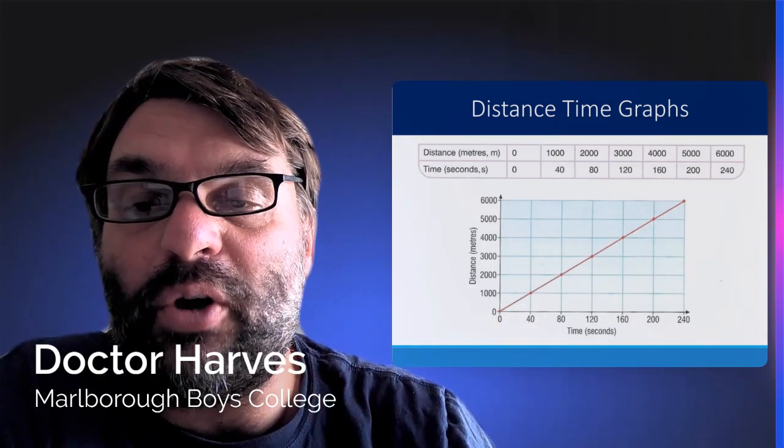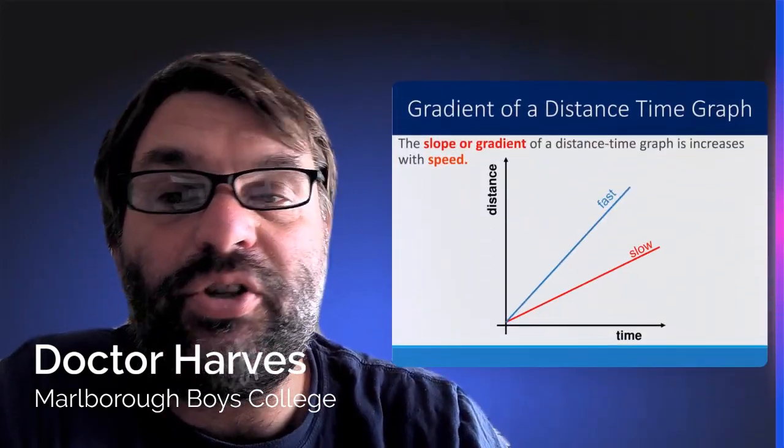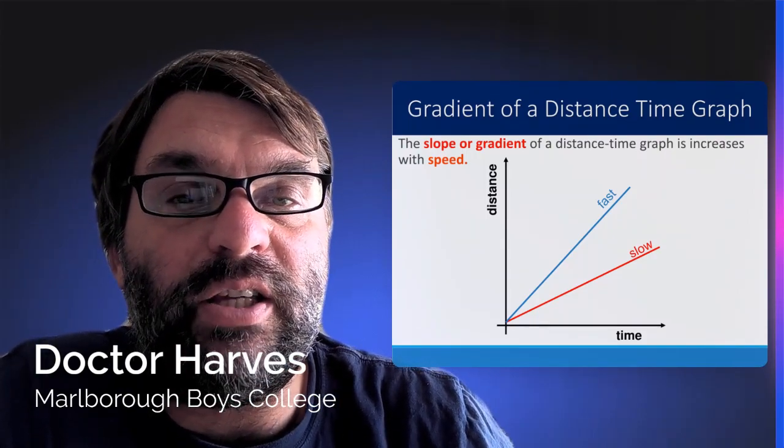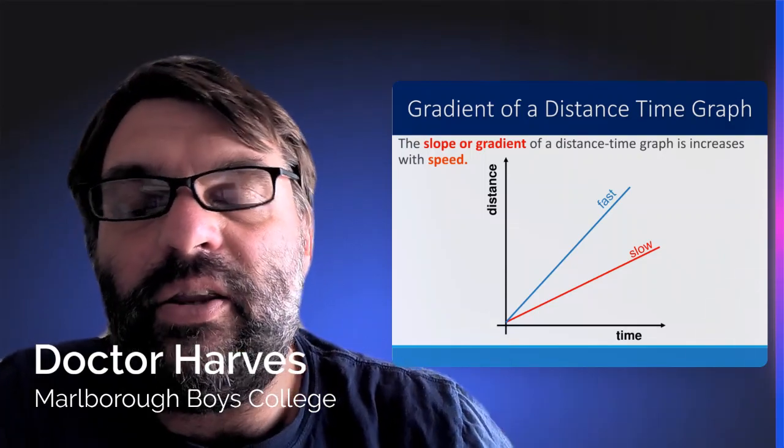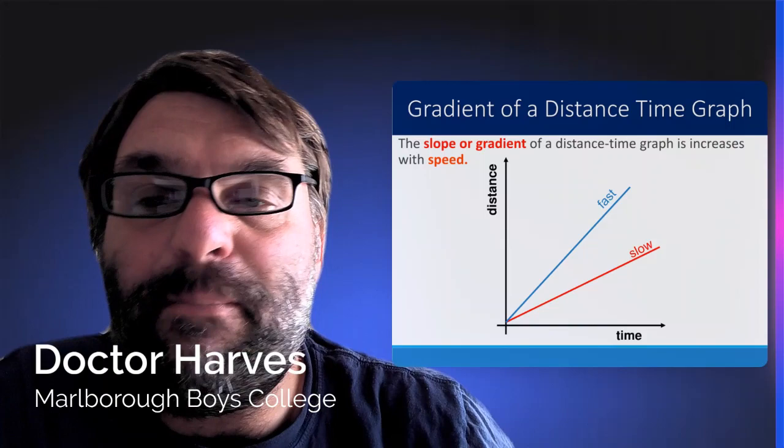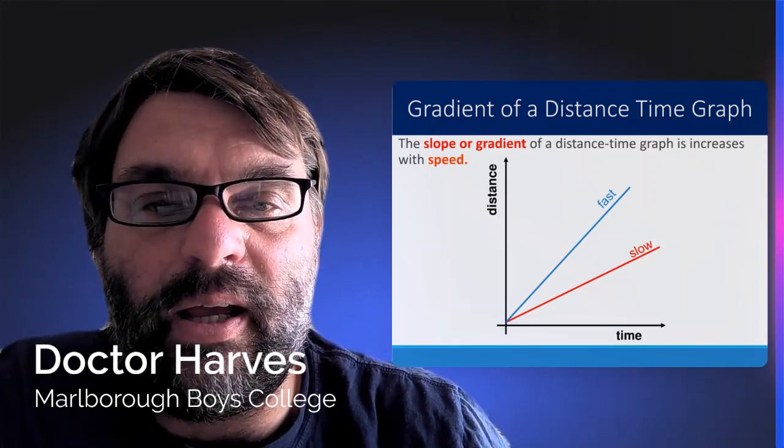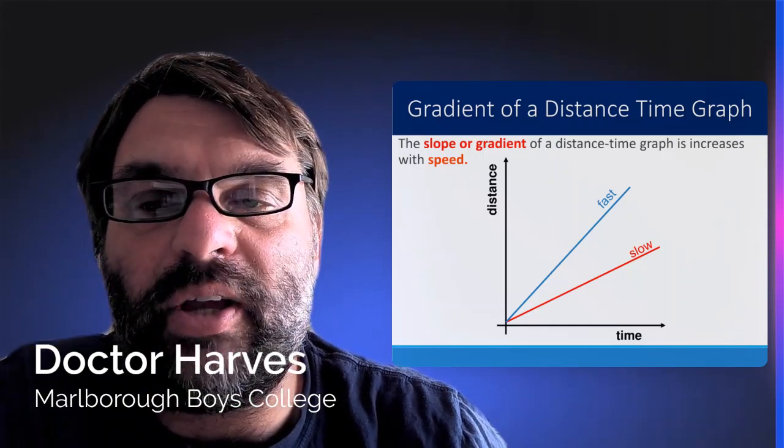And being able to plot those graphs becomes important later on, because the gradient or slope of a distance time graph increases with speed. So the faster the object, the steeper the gradient is, and the slower the object, the shallower the gradient is.